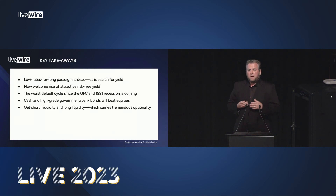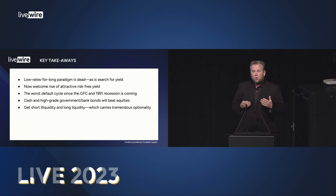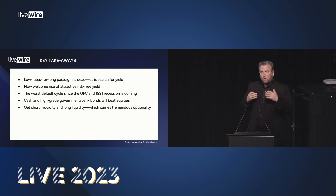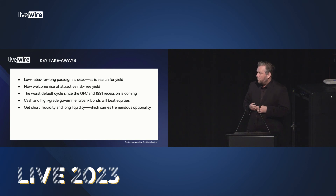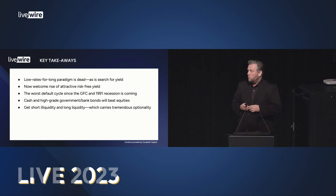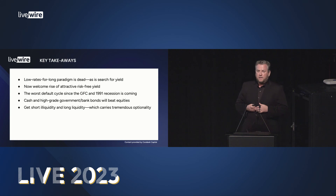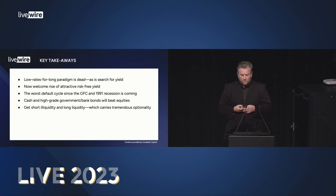In summary, we think the low-rates-for-long paradigm is dead, as is the search for yield. We welcome the rise of attractive risk-free yield. We think we'll have the worst default cycle in Australia since the 1991 recession, and that cash, government and bank bonds will outperform equities over the next two to three years. Finally, you should get short illiquidity — avoid it like the plague — and go long liquidity to benefit from the optionality it gives you to capitalize on future dislocations.